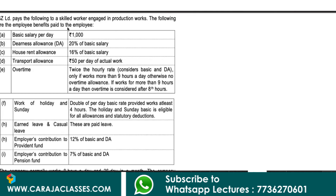The following are the employee benefits paid to the employee. Basic salary is Rs.1000 per day. Dearness allowance is 20% of basic salary. HRA is 16% of basic salary. Transport allowance is Rs.50 per day of actual work. Overtime is given as twice the hourly rate, considering basic and DA only if he works more than 9 hours a day; otherwise no overtime allowance.